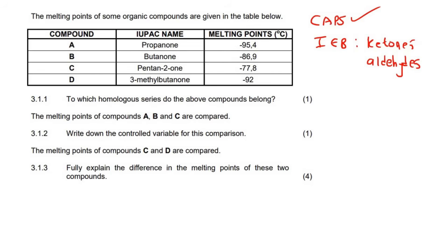So it says here: to which homologous series do the above compounds belong? What does homologous mean? Homologous means what kind of molecule is it - are they alcohols, alkenes, alkynes, esters, carboxylic acids, aldehydes, ketones? Those are the different homologous groups. Now if you look here, all of these end with the word '-one', and ketones also have a '-one' in them. So these are ketones.